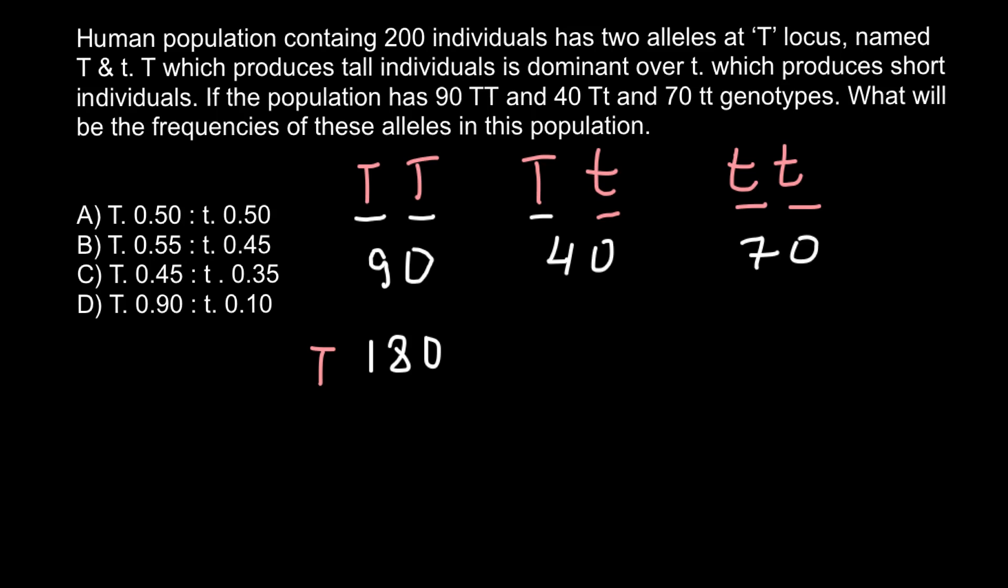And this group of people would have 40 alleles that is dominant T in one hand and 40 alleles that is recessive alleles t in other hand. Right?